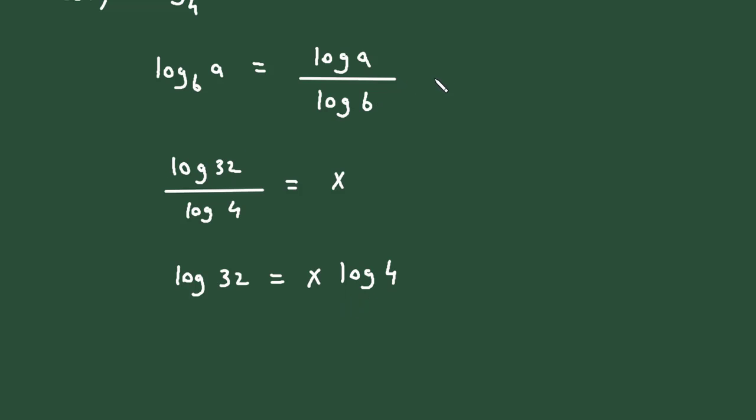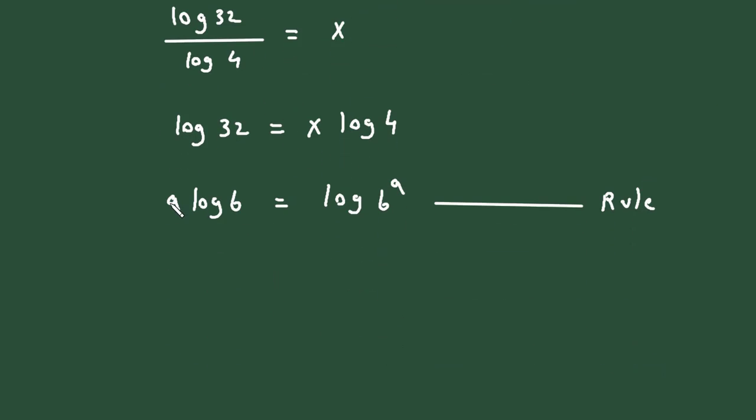This is one formula. Then there's another formula: A log B equals log B to the power A. This is also a logarithmic rule. If we apply this formula, we get log 32 equals log 4 to the power x.